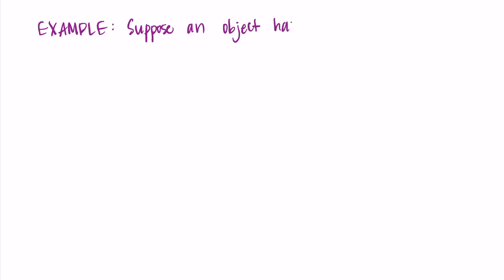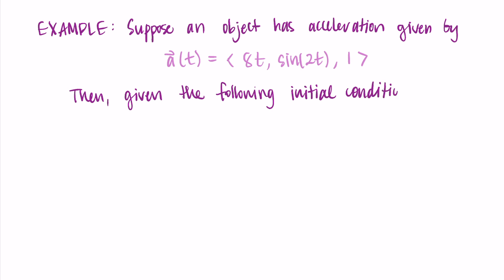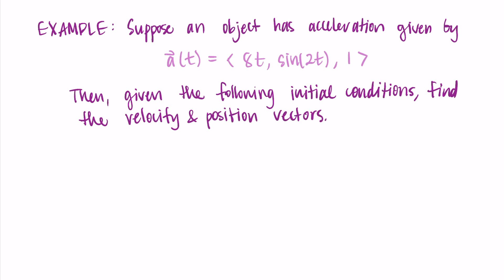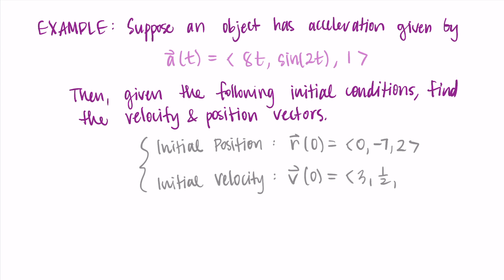For our second example we'll be integrating rather than differentiating. Suppose an object has acceleration a(t) = ⟨8t, sin(2t), 1⟩. Along with this I'll give the following initial conditions and ask you to find the velocity and position vectors. The initial position is r(0) = ⟨0, -7, 2⟩ and the initial velocity is v(0) = ⟨3, 1/2, -5⟩. We use t = 0 as the initial time.